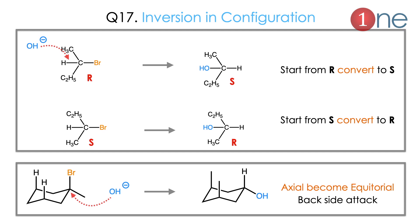Next: a basic question about inversion in configuration. Questions are often asked starting from R configuration. In SN2, the attack is from the back side, so S configuration is obtained. If you start from S, R will come. For cyclopropyl systems, always predict attack from the back side. If the leaving group is in axial position, the product will be in equatorial position. Always judge from the backside attack, which gives inversion of configuration.